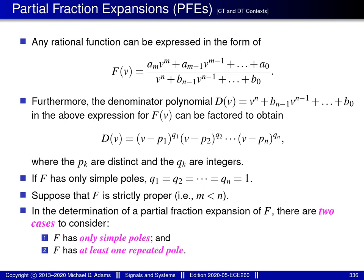Any arbitrary rational function can always be normalized such that the coefficient of the highest degree term in the denominator polynomial is 1. In other words, a rational function f can always be written in this particular form here, where v is a complex variable, the ak and bk are complex constants, and m and n are non-negative integers. Note in particular that the coefficient of the highest degree term in the denominator polynomial is 1 — in other words, this term here has a coefficient of 1.